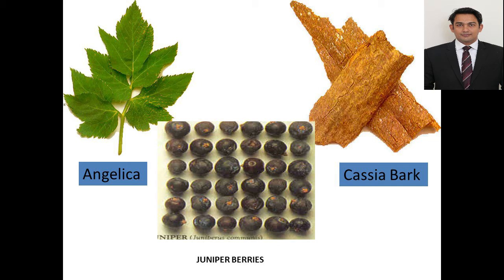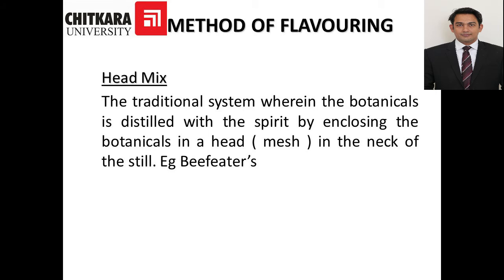Angelica, juniper berries, and cassia bark are visible examples of botanicals used. There are two methods to infuse these flavors. The first is the head mix, a traditional system wherein botanicals are distilled with the spirit by enclosing the botanicals in a mesh in the neck of the still — Beefeater gin is made by this process. The botanicals are hung at the neck of the pot still containing neutral spirit, which is heated so vapors pass through the botanicals, go to the condenser, and convert back into liquid.